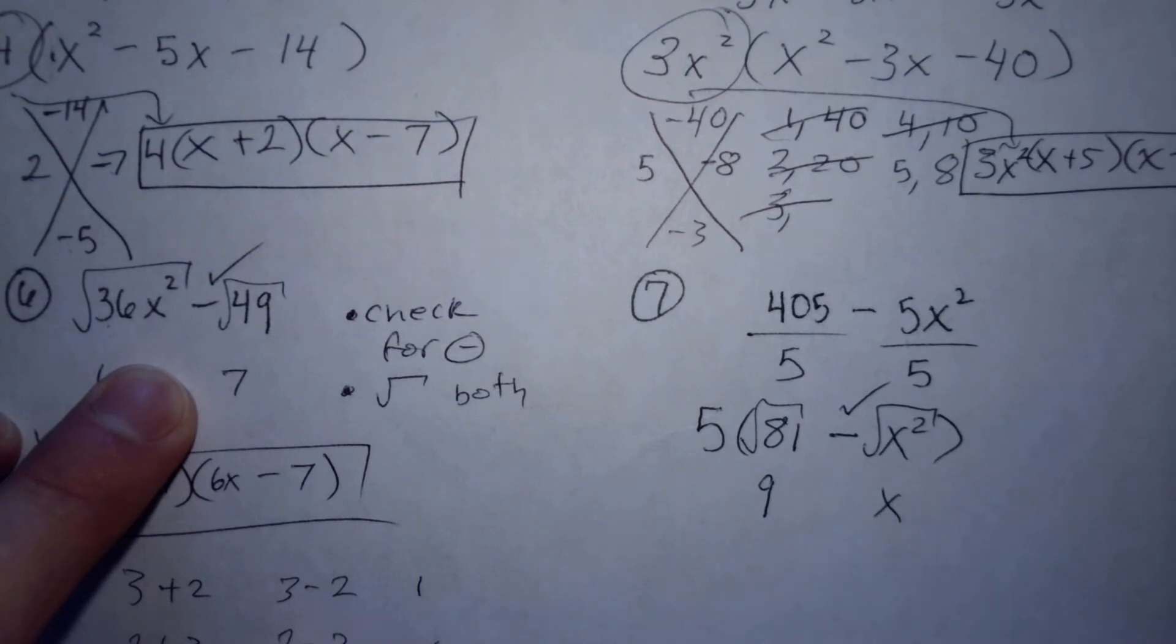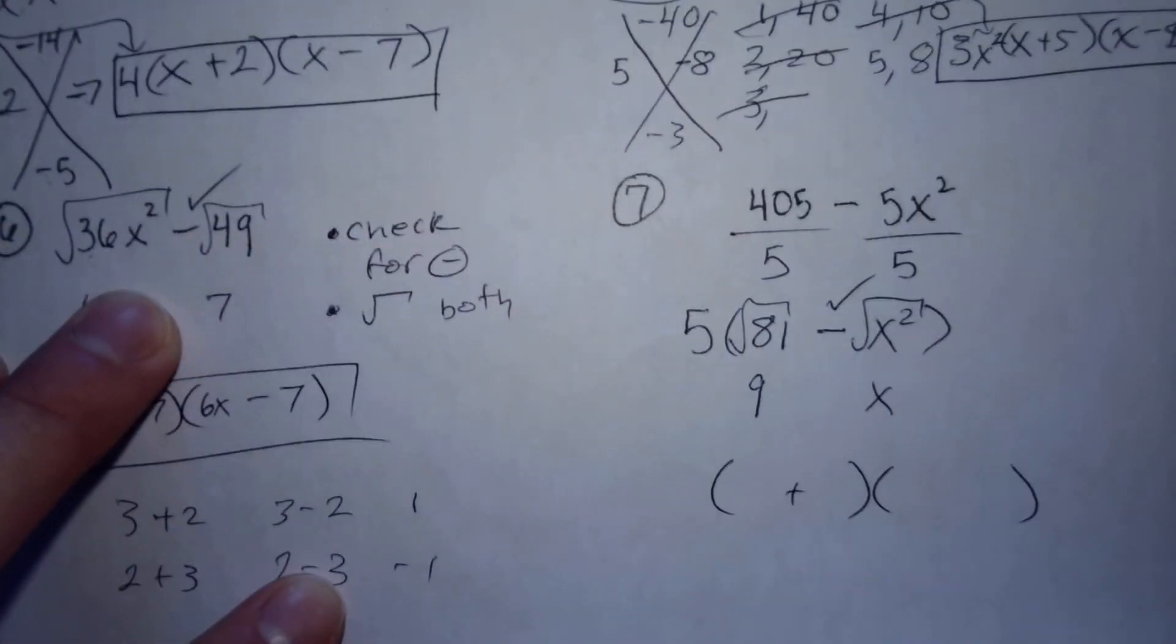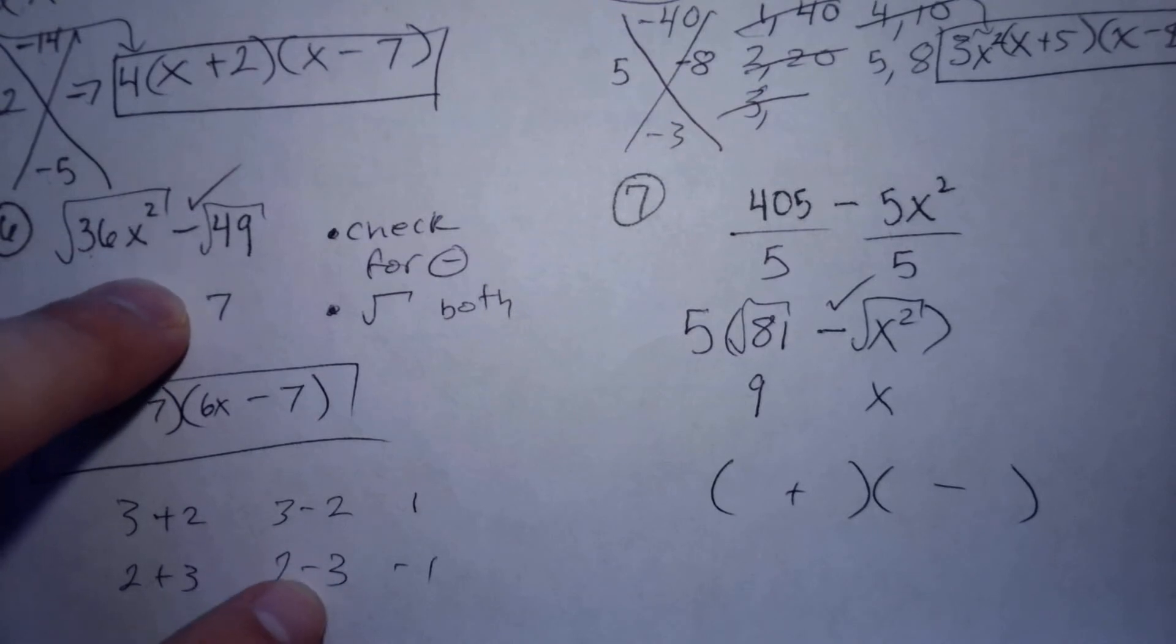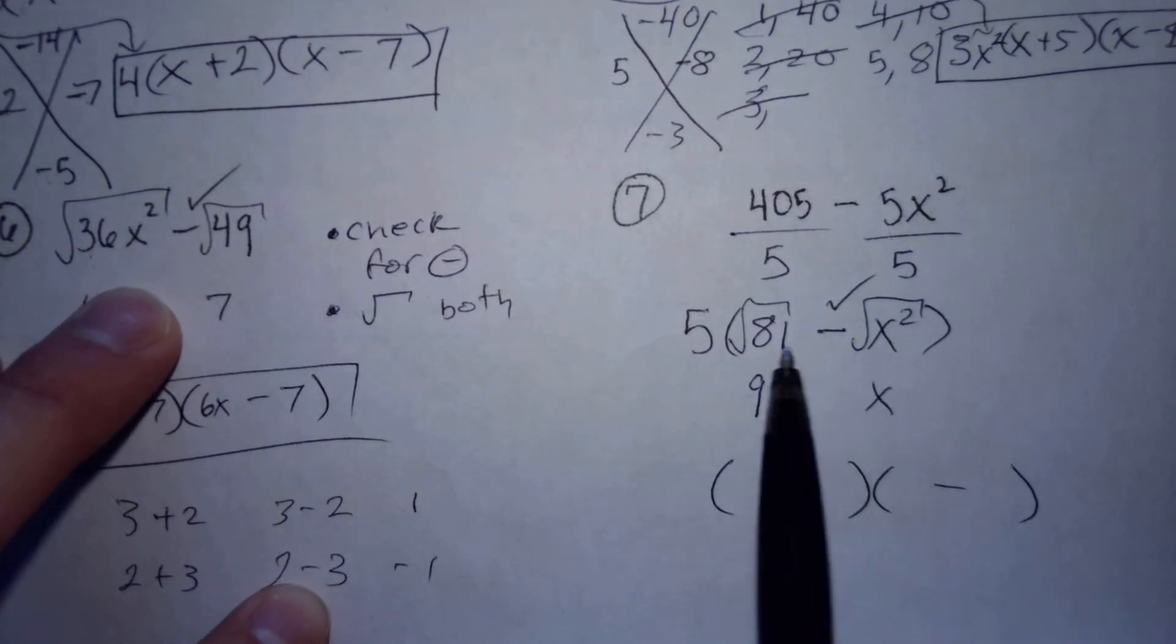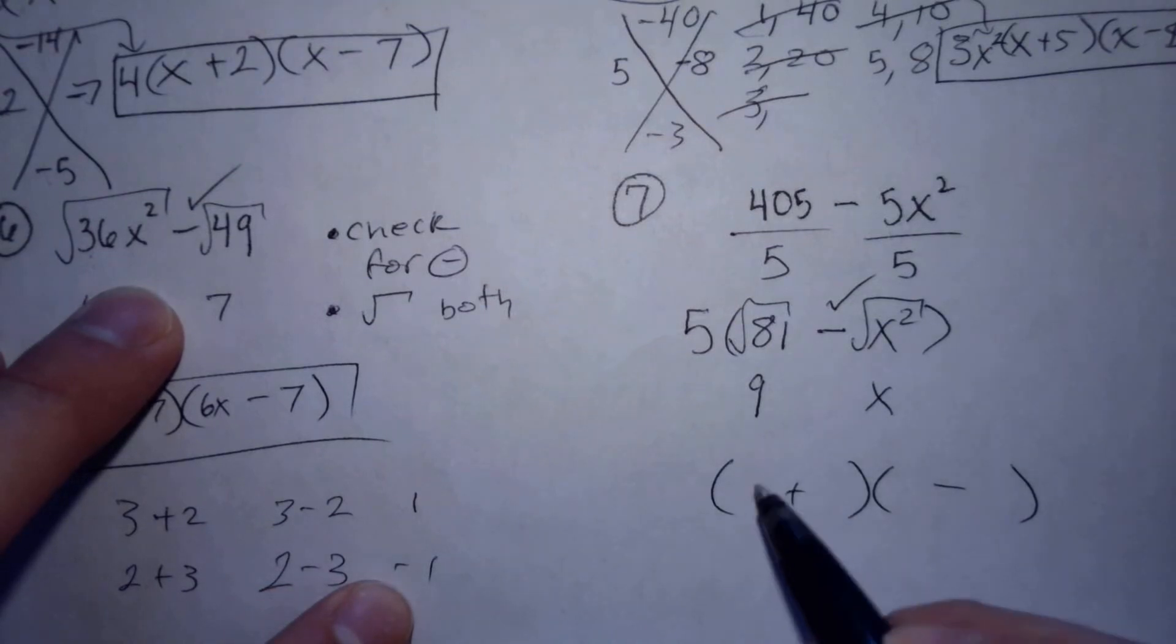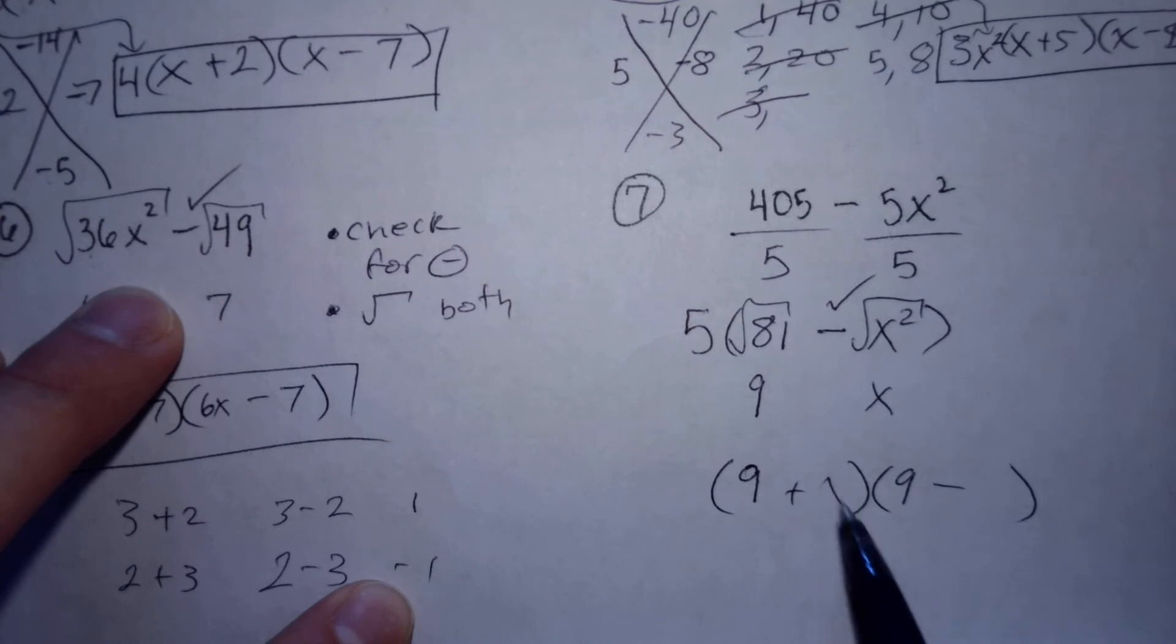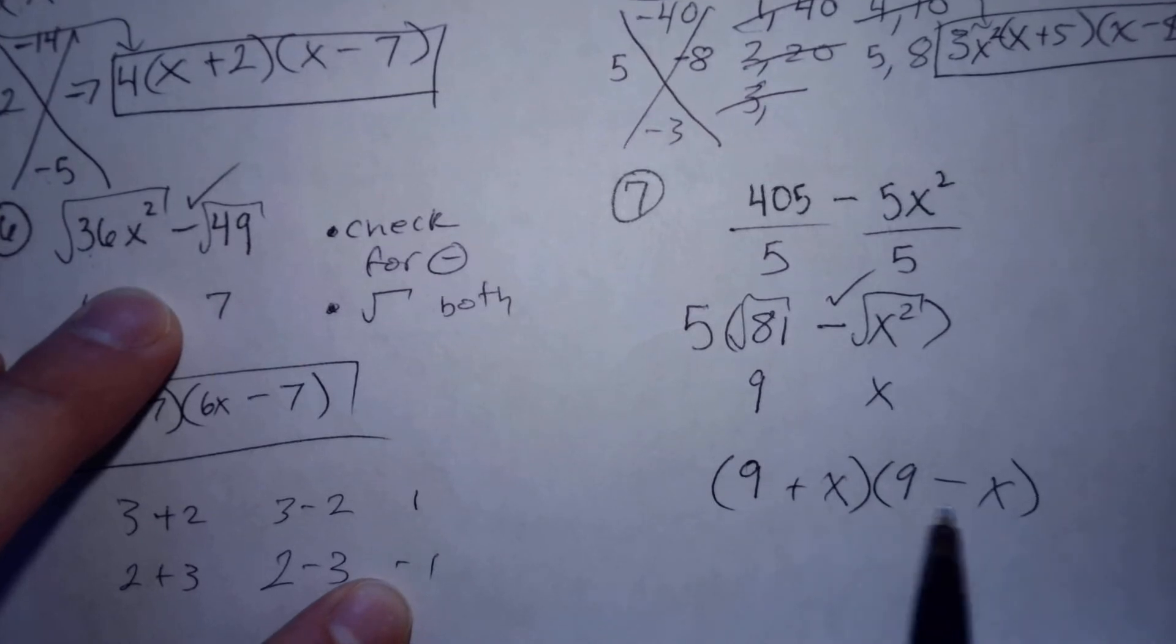So I can use my difference of squares pattern: one's plus, one's minus. This is where some people messed up - the nine comes first, so then you can write the nine first in both of them, and then the x comes second. Some people switch this around because they're used to saying x minus nine.